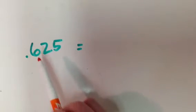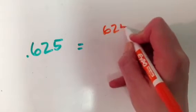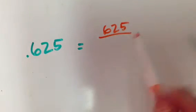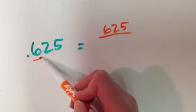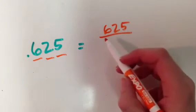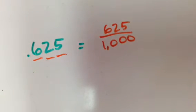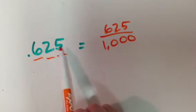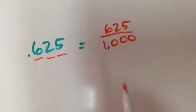So remember, if I want to change this decimal to a fraction, all I'm going to do is write that 625 over how many places behind the decimal point this is. So here's the tenths, the hundredths, and the thousandths. So because it's the thousandths place, I'm going to put a thousand under here. That's all it is. 625 thousandths becomes 625 thousandths, right? They mean the same thing.